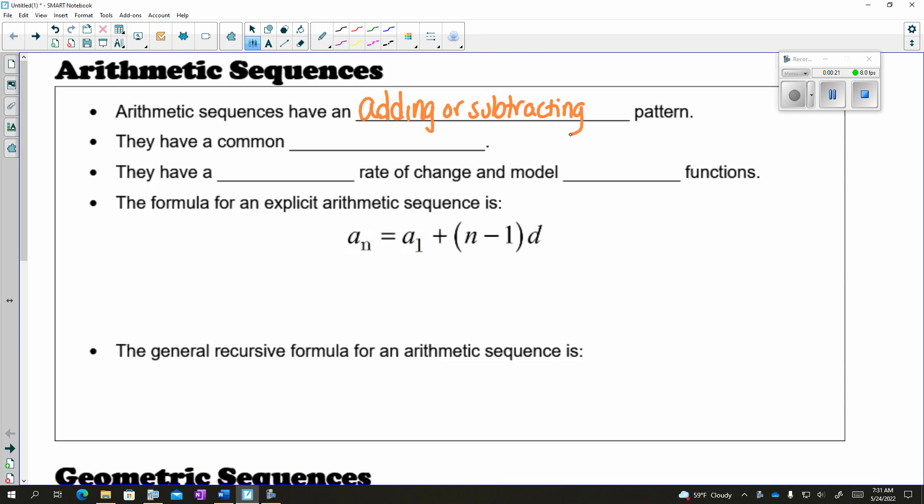They have a common difference and they have a constant rate of change, which is modeled after a linear function. So for example, 2, 5, 8, 11, and so on.